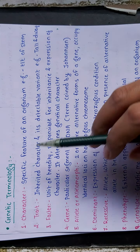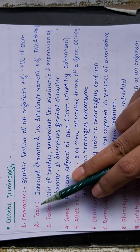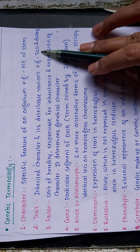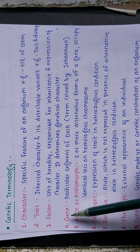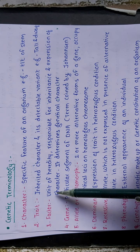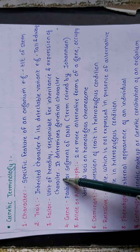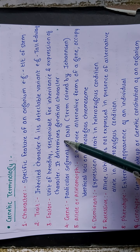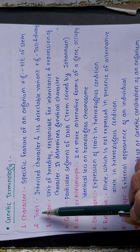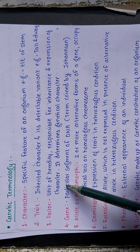Note the difference: character refers to the specific feature — height of the stem. Trait refers to whether it is tall or dwarf. The third term is 'factor': the unit of heredity, responsible for the inheritance and expression of a character, determining the genetical character. The fourth term is 'gene': a particular segment of DNA. The gene concept was coined by Johanssen.